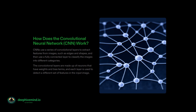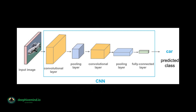How does the convolutional neural network work? The CNN works by processing and analyzing visual data in a hierarchical manner. The process begins with the input layer, where the raw visual data is fed into the network. The data is then passed through multiple layers of neurons, each performing a specific task. The first layer of neurons, called the convolutional layer, applies a set of filters to the input data. These filters are designed to detect specific features in the data, such as edges, textures, and shapes.